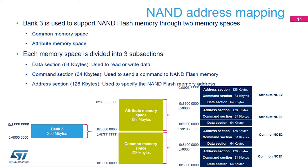This allows you to implement pre-write functionality needed by certain NAND Flash memories by writing the last address byte with different timings. Each memory space is subdivided into three sections: a data section of 64 kilobytes used to read or write data from NAND Flash memory, a command section of 64 kilobytes used to send a command to NAND Flash memory, and an address section of 128 kilobytes used to specify the NAND Flash memory address.